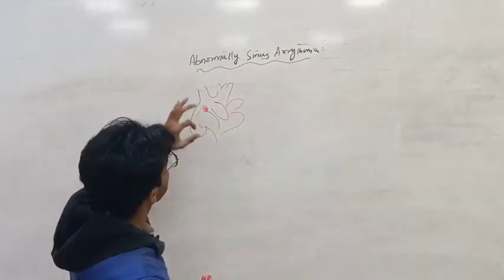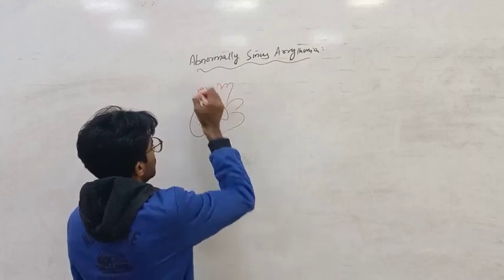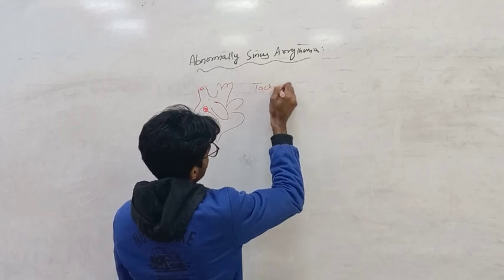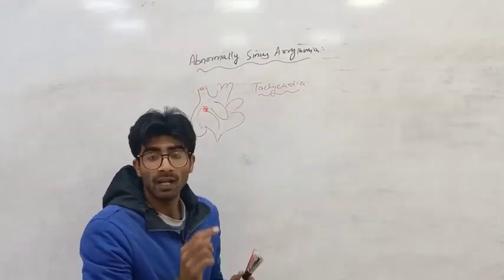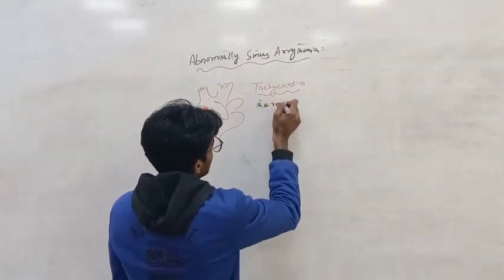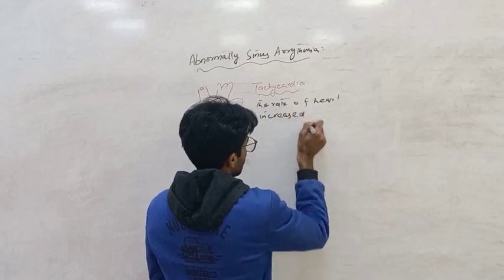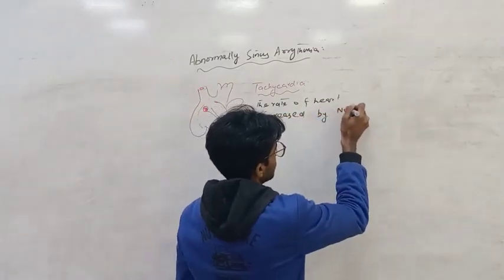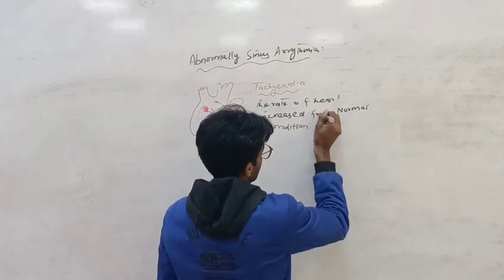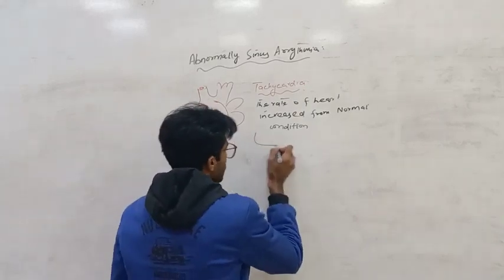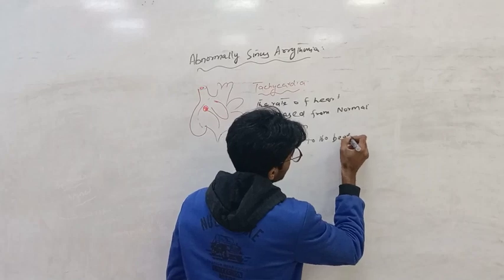That is known as abnormal sinus arrhythmia. In this condition, tachycardia happens. What is tachycardia? The rate of heartbeat is increased from the normal condition — that is known as tachycardia — approximately 150 to 160 beats per minute.